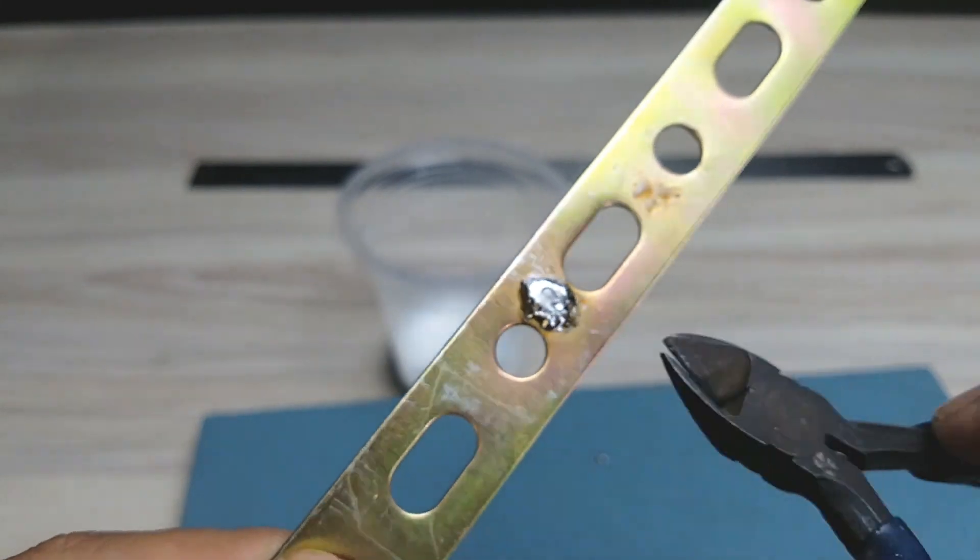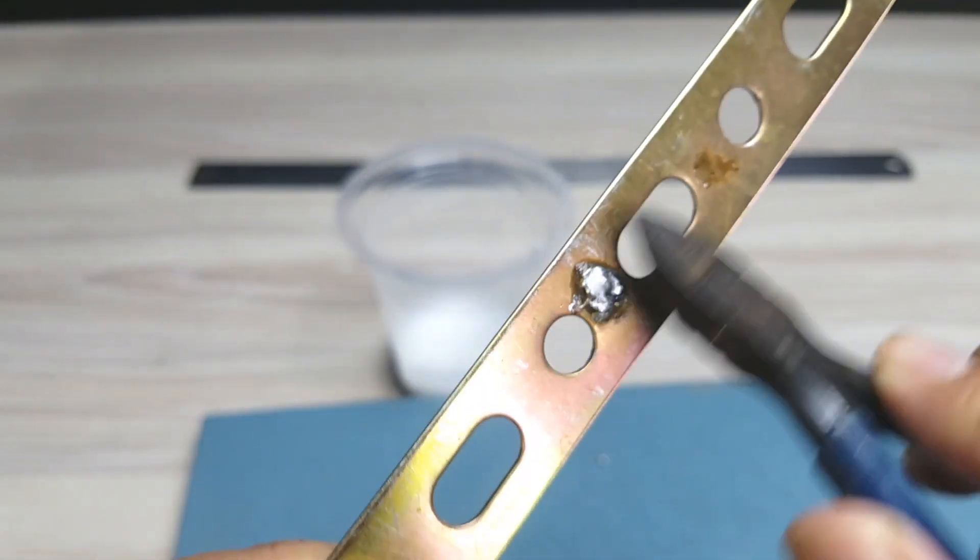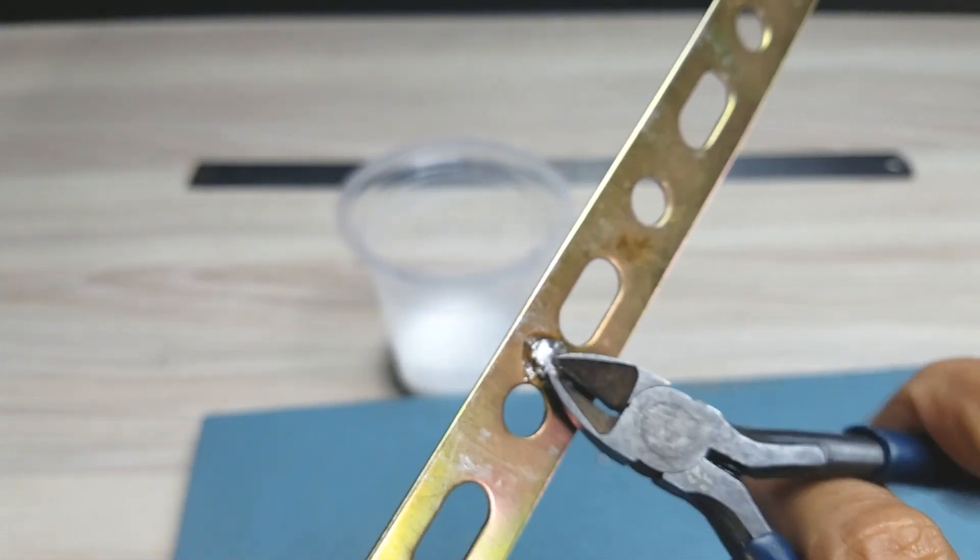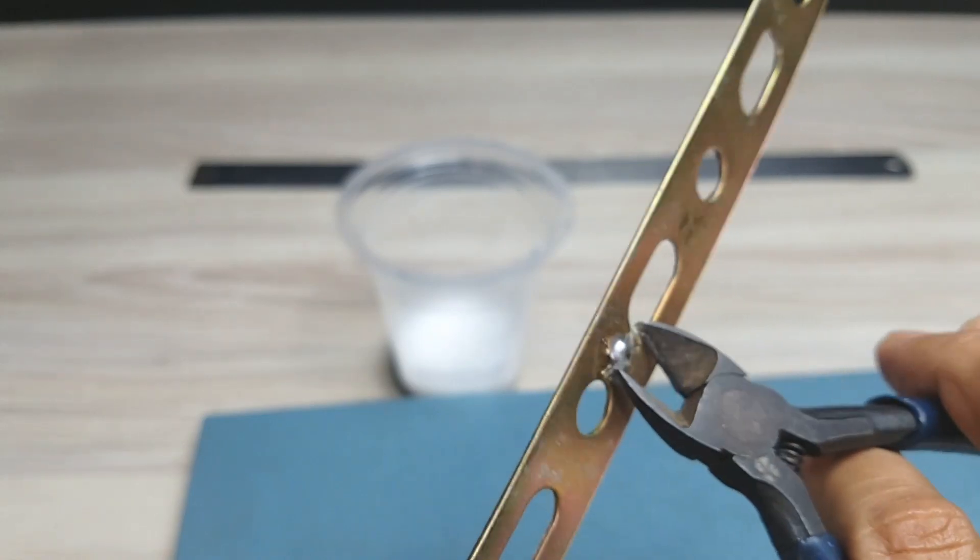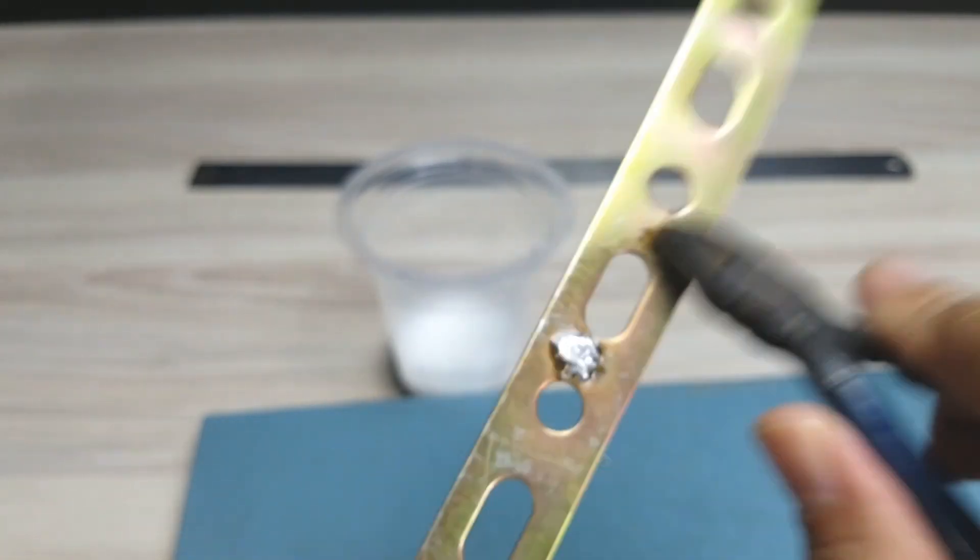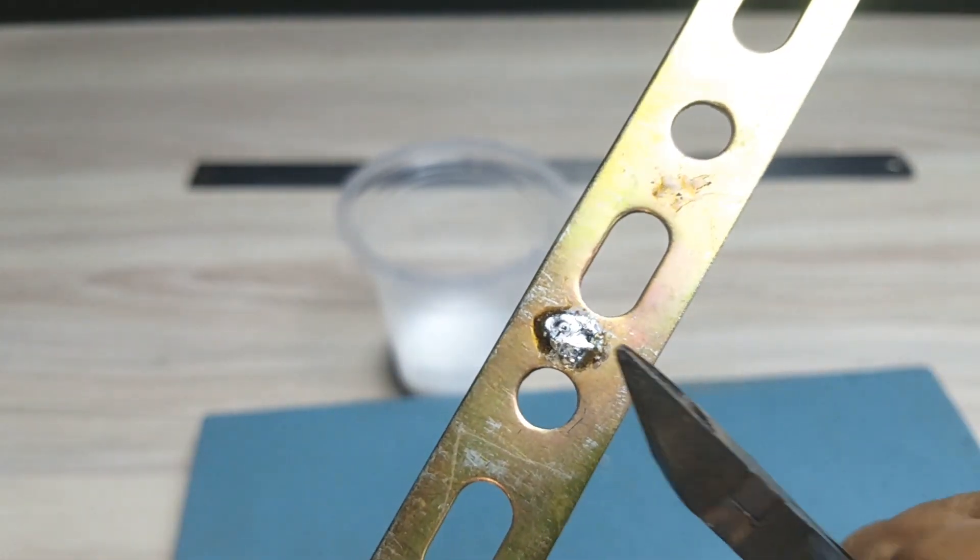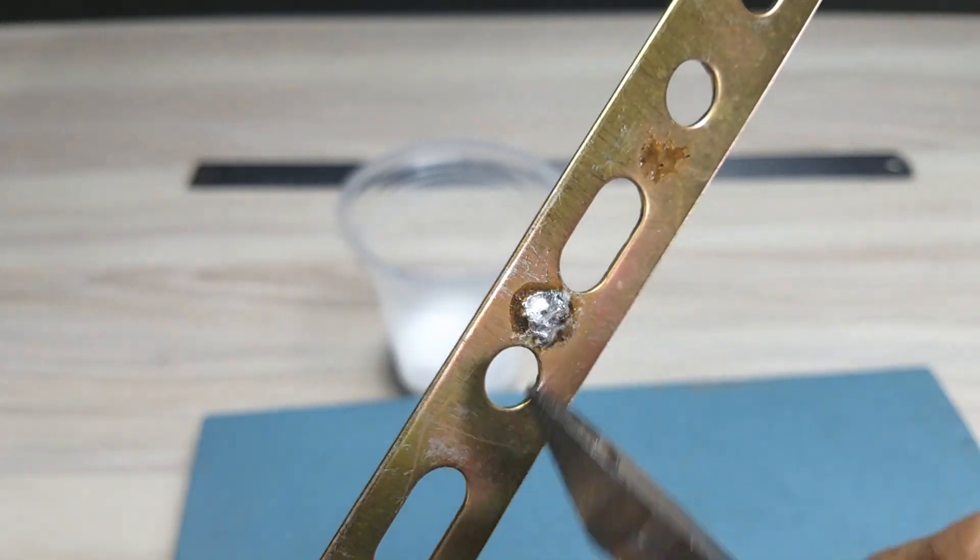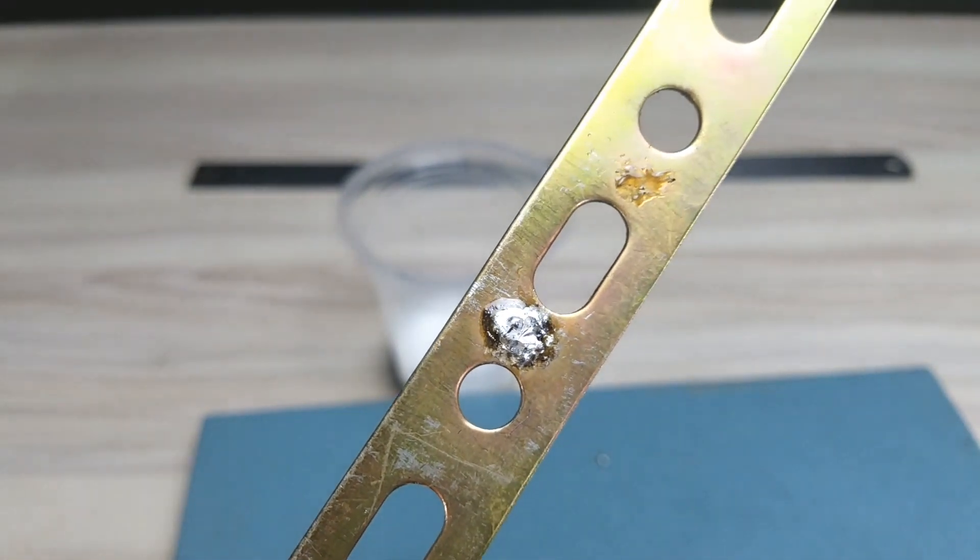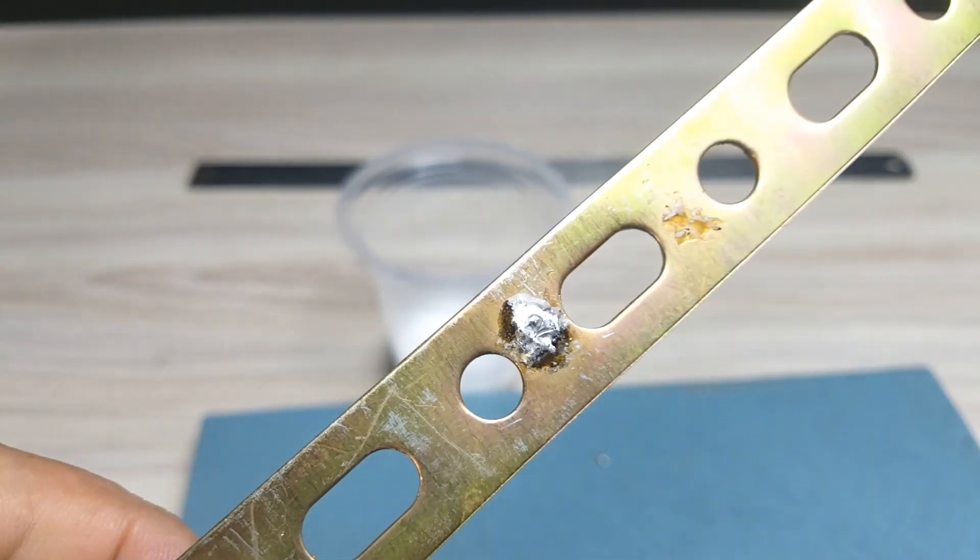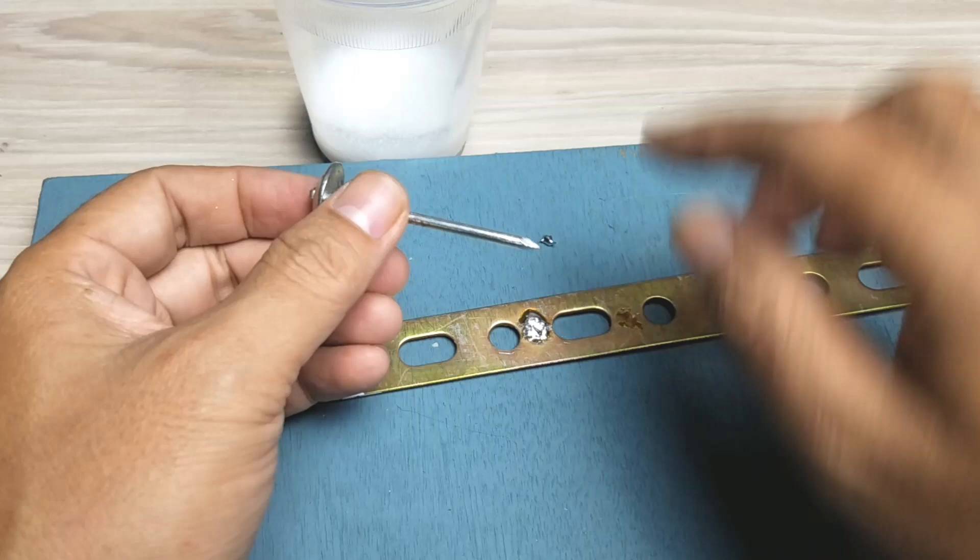Hasilnya seperti ini. Ini sangat kuat sekali merekatnya teman-teman. Ini susah untuk dilepas. Keren teman-teman ya, hanya menggunakan barang-barang sederhana bisa membuat flux yang canggih seperti ini.